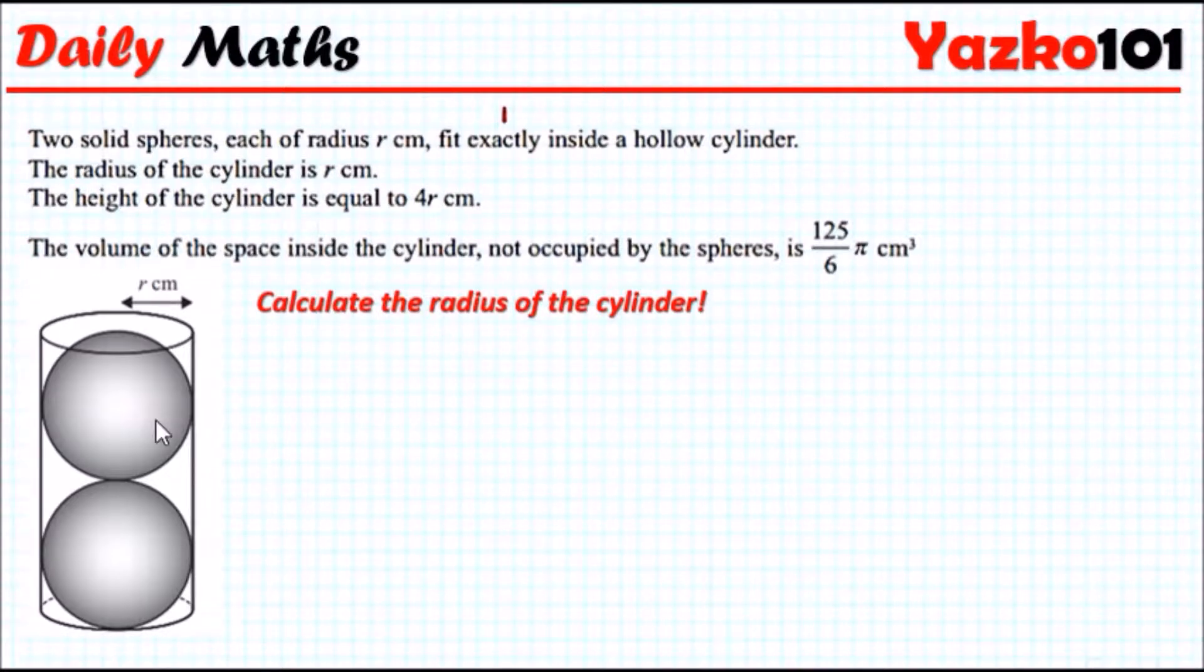So we're given two solid spheres, as you can see here, each of radius r centimeters, fitting exactly inside a hollow cylinder. The radius of the cylinder is r centimeters, and the height of the cylinder is equal to 4r centimeters.